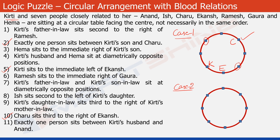Let's first copy the data from the first case to the second one — so let's put K, E, and C, representing Kirti, Ekanch, and Charu in the structure. Now let's put Kirti's son: in Case 1 we put him here, and in Case 2 we put son here. The first letters of names go inside the circle, while relations are written outside the circle — this makes comprehending the data much easier.